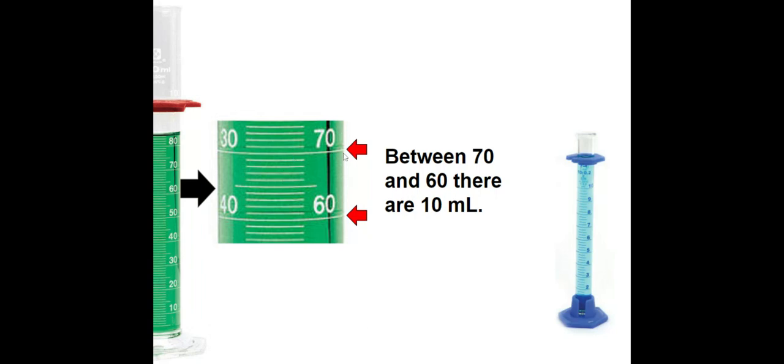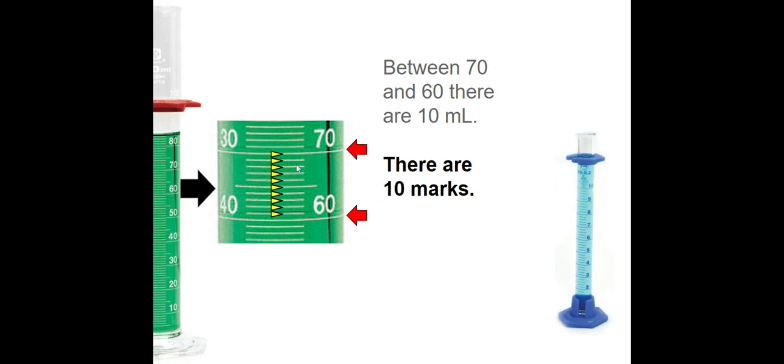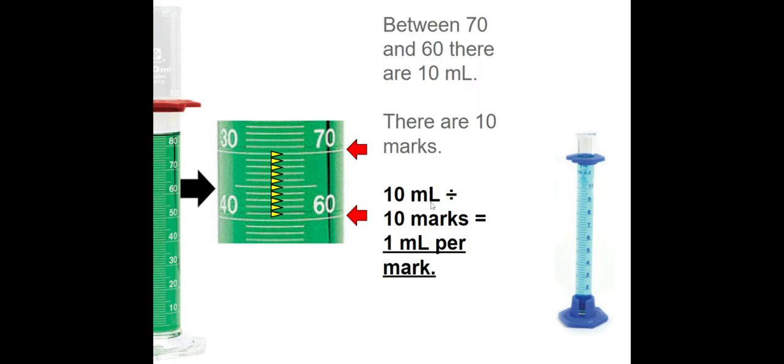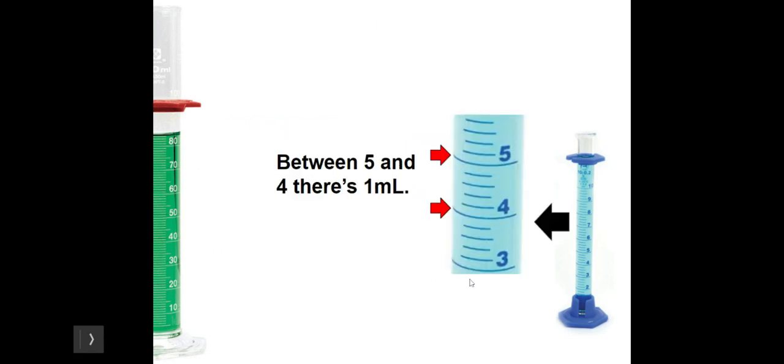So on this one, this green one, you can see these parts that you can tell what they are. So this is 70 milliliters and 60 milliliters. So you know that between 70 milliliters and 60 milliliters, it's got to be 10 milliliters, because 70 minus 60 is 10. And looking at these little marks, there are 10 little marks. 1, 2, 3, 4, 5, 6, 7, 8, 9, 10. So if you take that 10 milliliters, divide it by the 10 marks, that means there's 1 milliliter per mark. So each of those little marks is 1 milliliter.